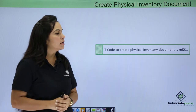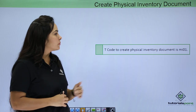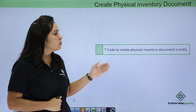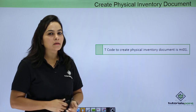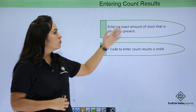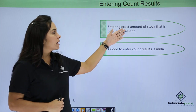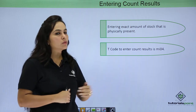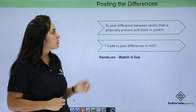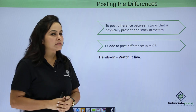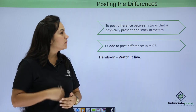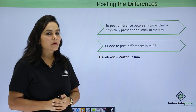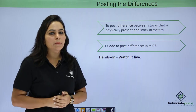To execute the physical inventory process, it is a three-step process. First, we will create a physical inventory document by going to transaction code MI01. The next step is entering the count result — we will enter the exact amount of stock that is physically present by going to transaction code MI04. The third and final step is posting the differences between the stock that is physically present and the stock present in the system, using transaction code MI07.